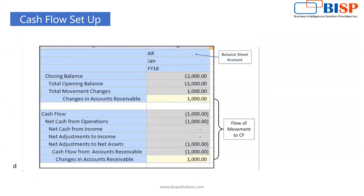For example, suppose we have Account Receivable, which is an asset item. If we make the cash flow and there is an increase in the asset, it will show as a negative number in the cash flow. So if you have changes in Account Receivable as a positive change, it should come as negative in the cash flow. We have an opening balance of 11,000, getting a closing balance of 12,000, but for cash flow purposes it is auto-reversing the 1,000 amount — so at Net Cash from Operations we get a negative 1,000 figure.